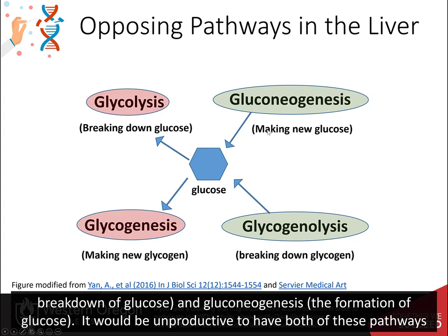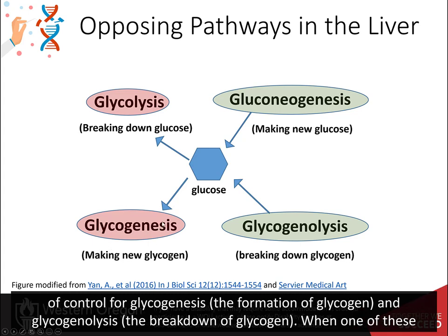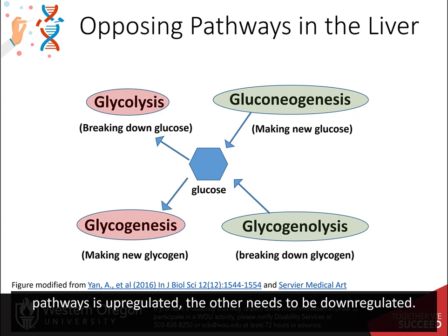It would be unproductive to have both of these pathways operating at the same time. Thus, if one pathway is needed, then the other one needs to be turned off. We previously saw this same type of control for glycogenesis, the formation of glycogen, and glycogenolysis, the breakdown of glycogen. When one of these pathways is upregulated, the other needs to be downregulated.